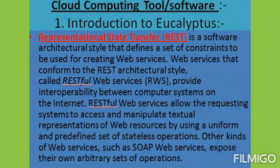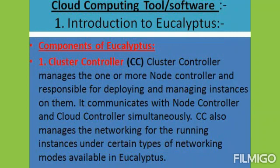The second component is cloud controller. The cloud controller is the front end for the entire ecosystem. It provides an Amazon EC2 and S3 web services interface to the client tools on one side and interacts with the rest of the Eucalyptus infrastructure components on the other side.